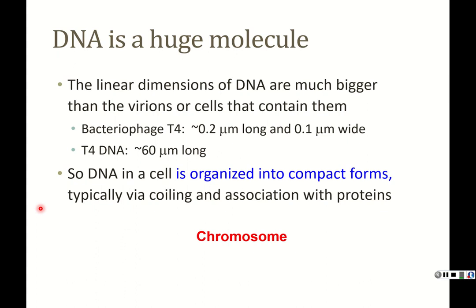DNA is a very big molecule. When you look at the length of a DNA molecule in a given cell type, it's really quite a bit longer than the cells it goes into. So it has to be organized and compacted very tightly to fit in these cells. That's where we get the term chromosome — when DNA is coiled and tightly packed, usually with the help of proteins, we call this a chromosome.